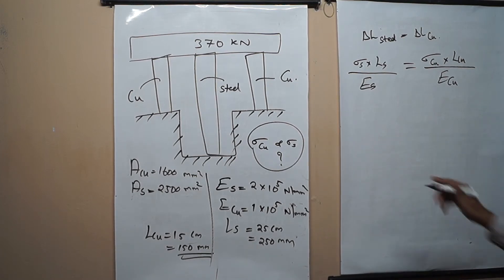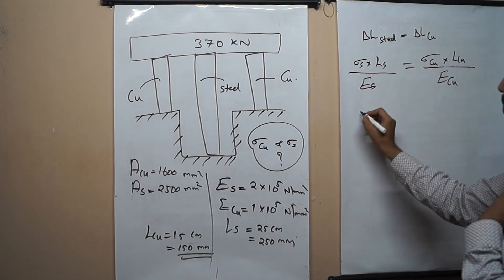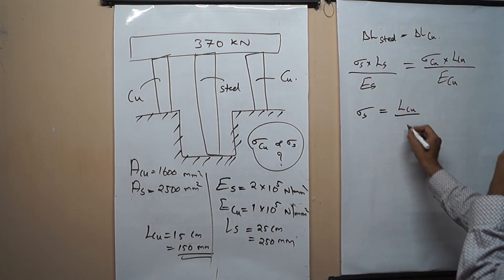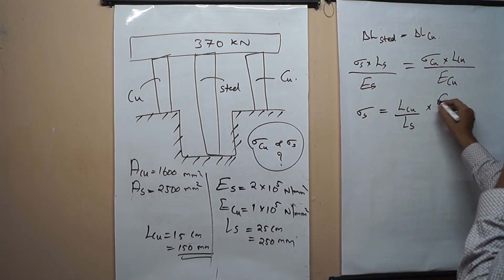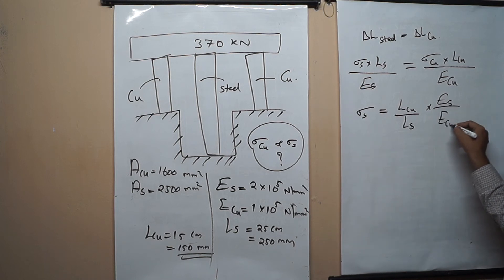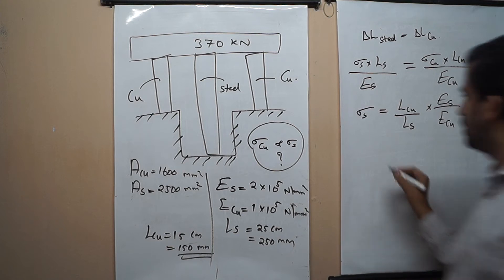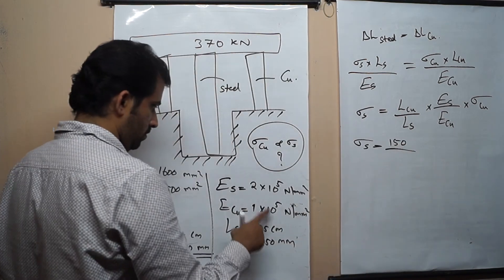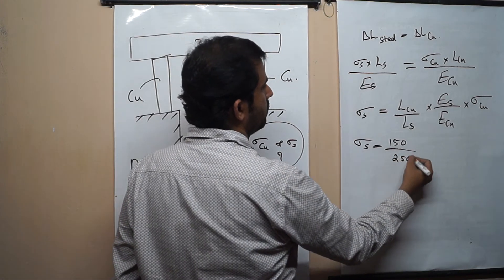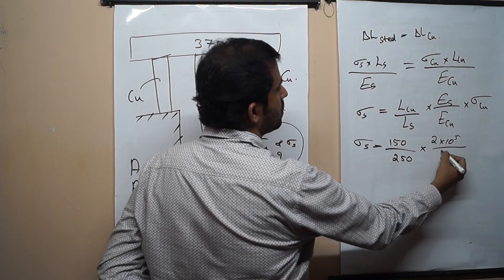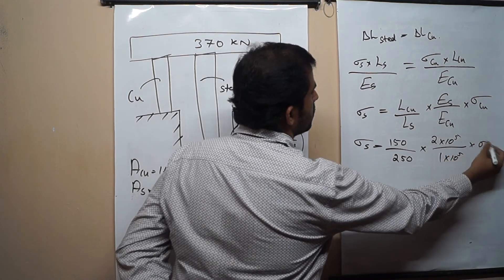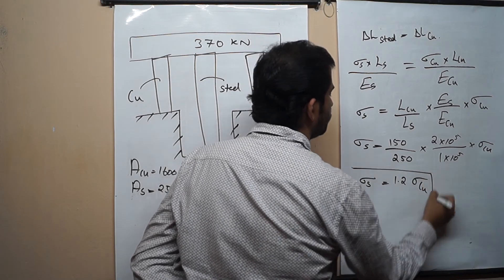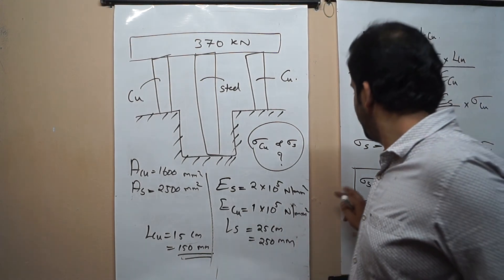Writing sigma_steel in terms of sigma_copper: sigma_steel equals (L_copper divided by L_steel) times (E_steel divided by E_copper) times sigma_copper. Substituting values: sigma_steel equals (150/250) times (2×10⁵ / 1×10⁵) times sigma_copper. Solving this, we get sigma_steel equals 1.2 times sigma_copper. So we have a relation for sigma_steel.